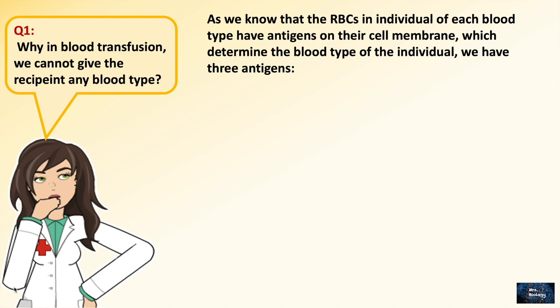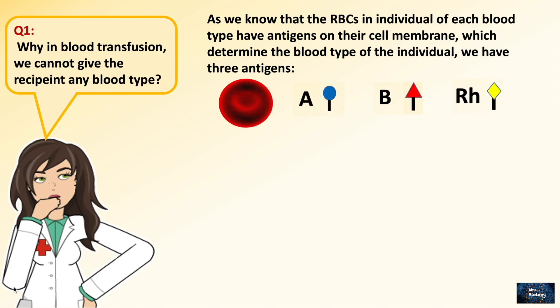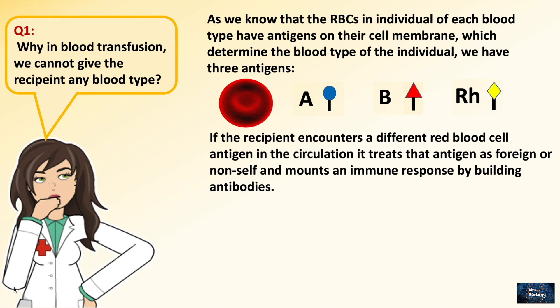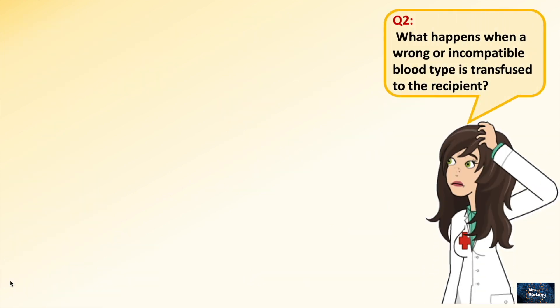The RBCs of each blood type have antigens on their cell membrane which determine the blood type of the individual. We have three antigens: A, B, and Rh. If the recipient encounters a different red blood cell antigen in the circulation, it treats that antigen as foreign. Not only that — it will mount an immune response by building antibodies: A antibody, B antibody, and Rh antibody.